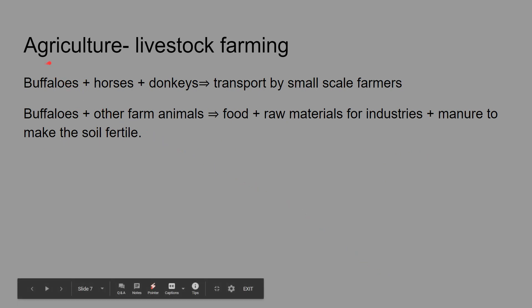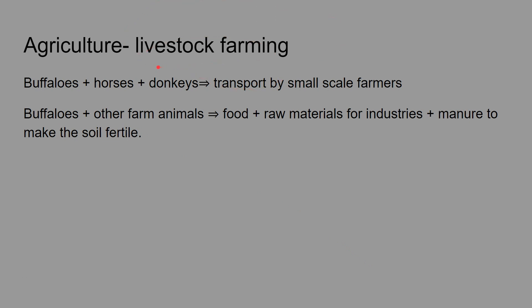Now let's talk about the livestock part of agriculture. Buffaloes, horses, and donkeys are used for transport by small-scale farmers. Buffaloes and other animals give us food and raw materials for industries — for example, wool from sheep is used in the clothes industry. Manure from these animals also makes the soil fertile.